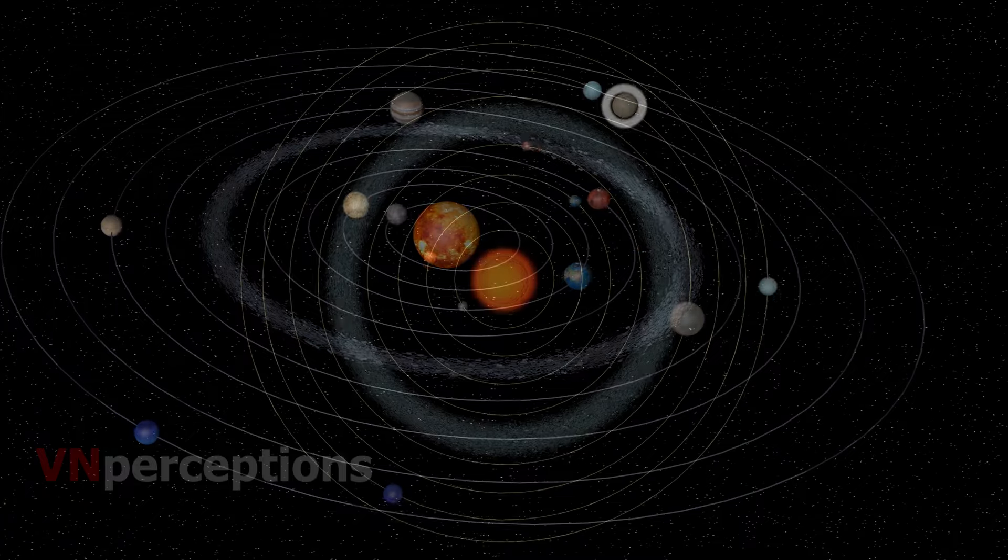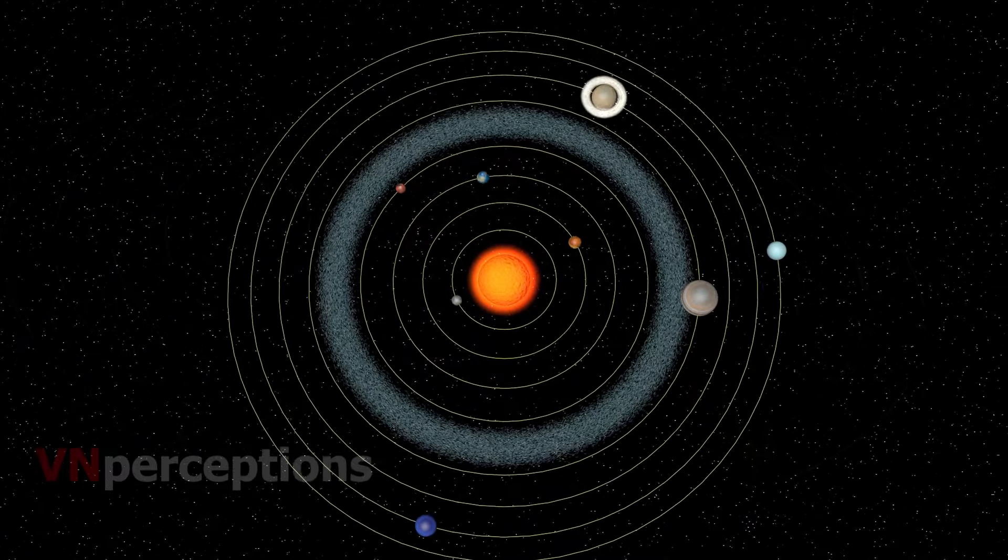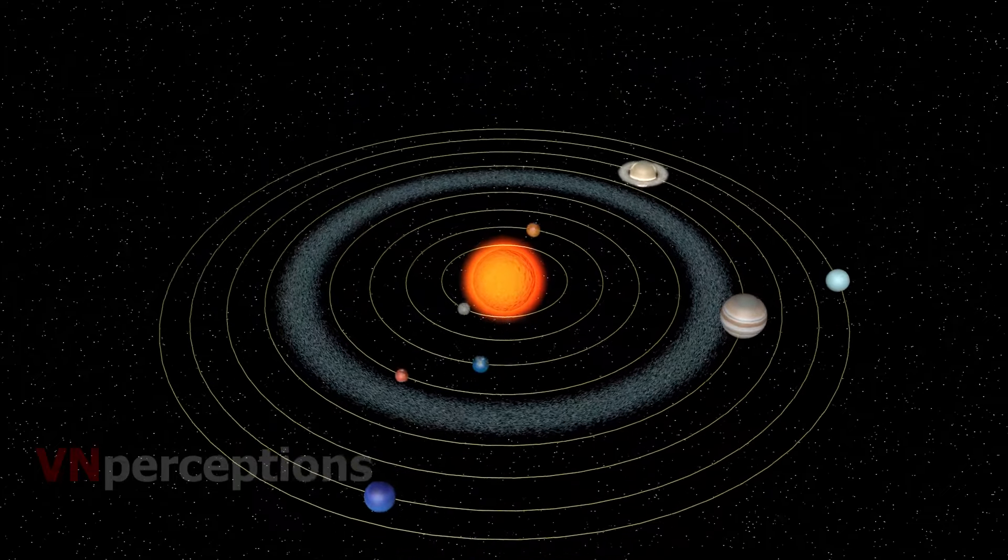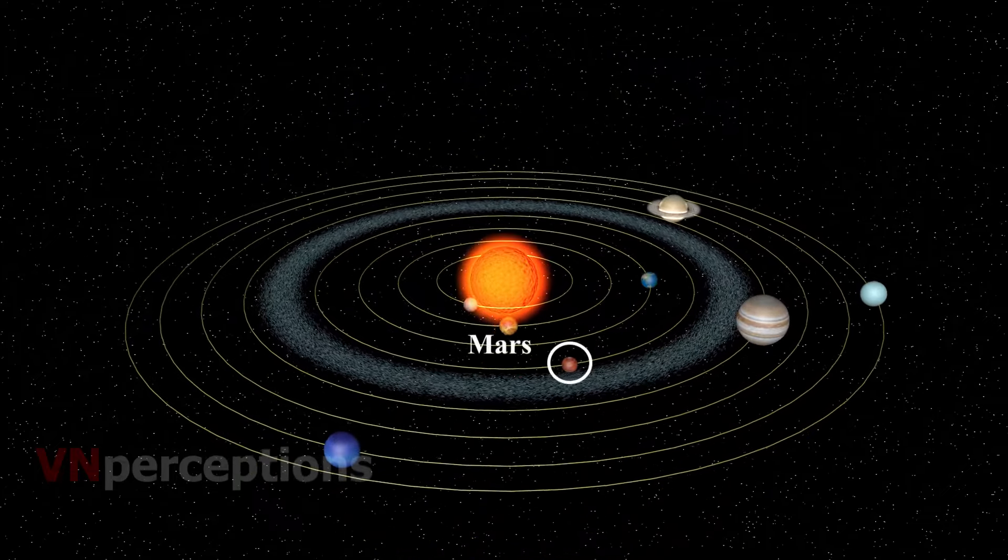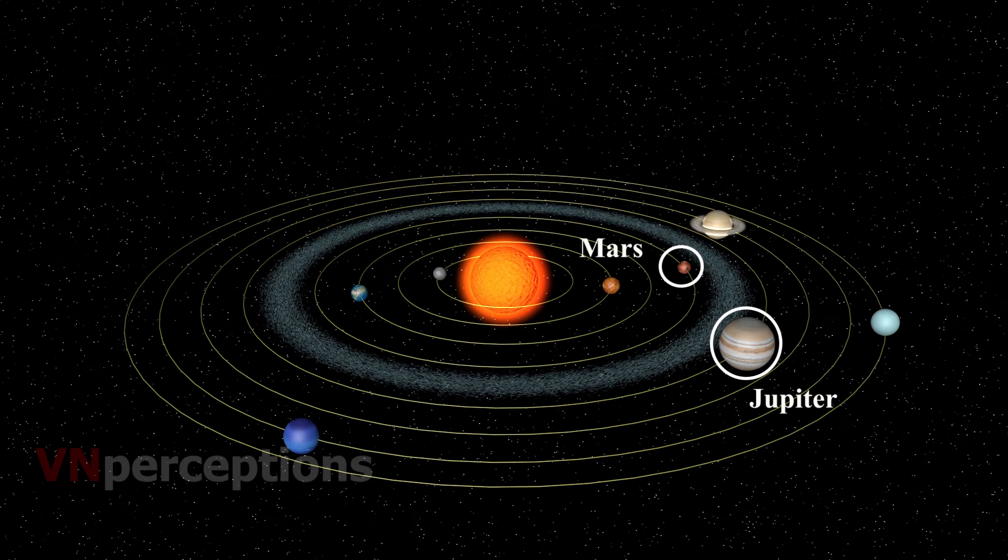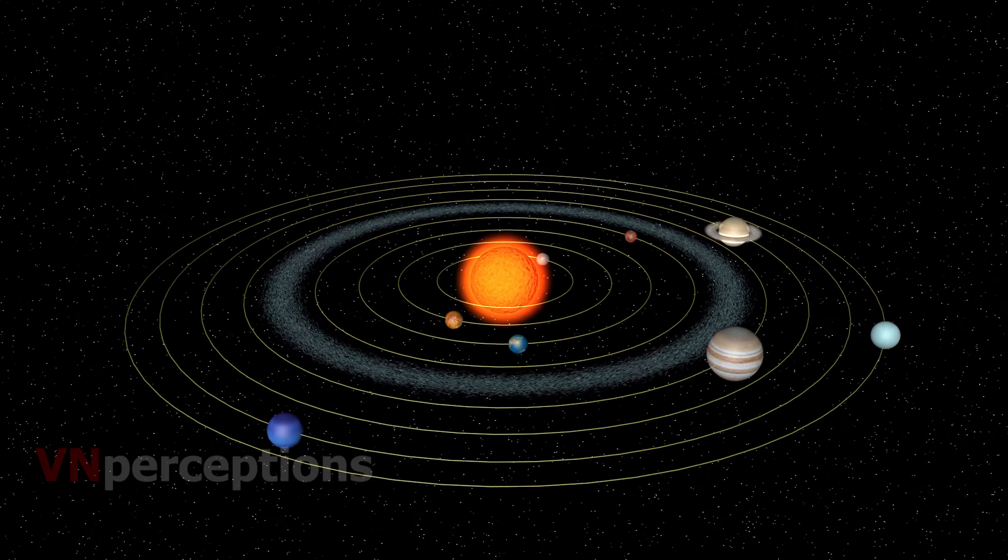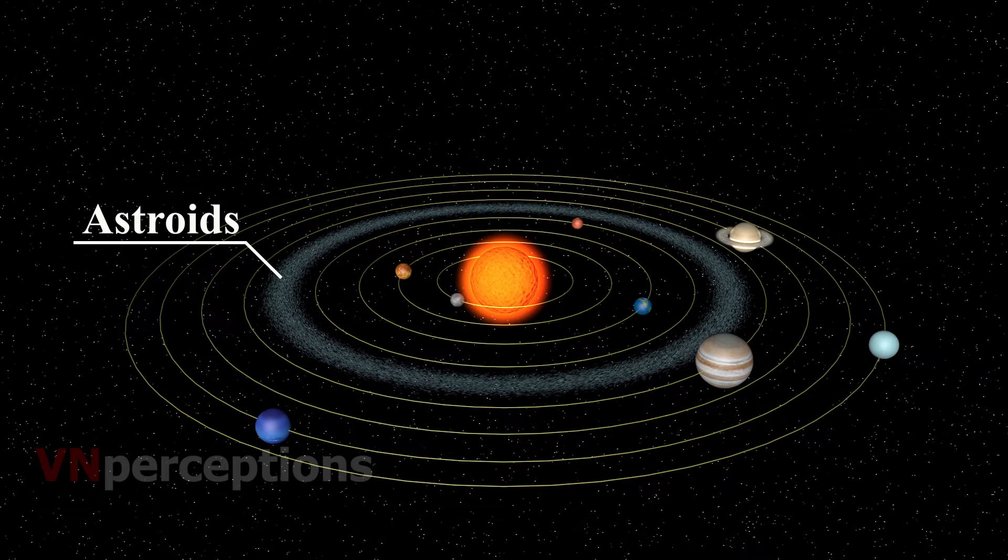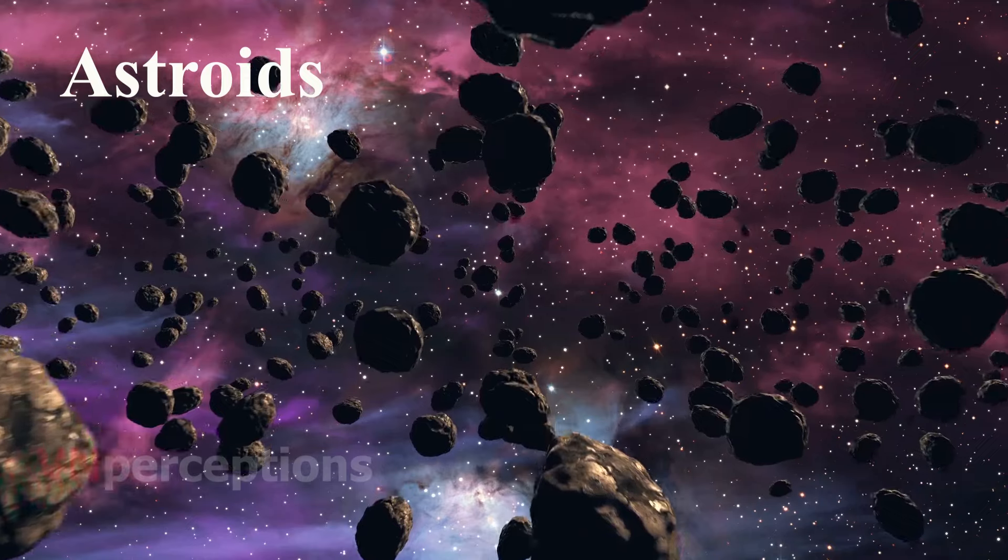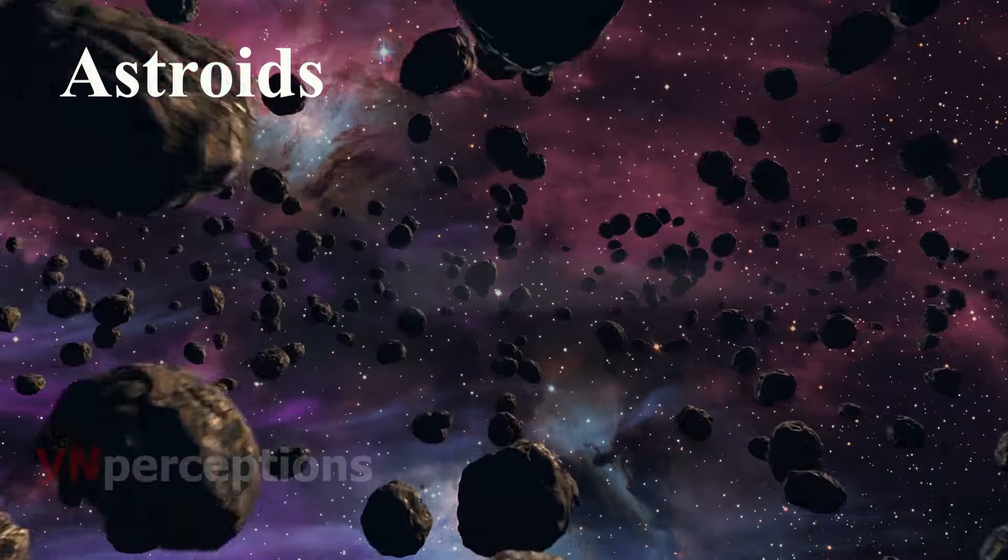Let us learn about some other members of the solar system. The first one is asteroids. There is a large gap in between the orbits of Mars and Jupiter. This gap is occupied by a large number of small objects that revolve around the Sun and these are called asteroids. Asteroids can only be seen through large telescopes.